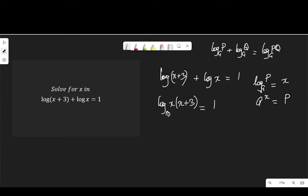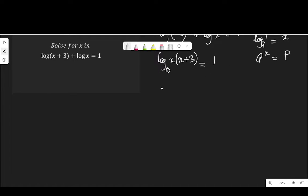The log reading of a number p to base a is equal to the index x to which a must be raised to be equal to p. So if I apply that here, that means x multiplied by x plus 3 is equal to 10 to the power of 1.